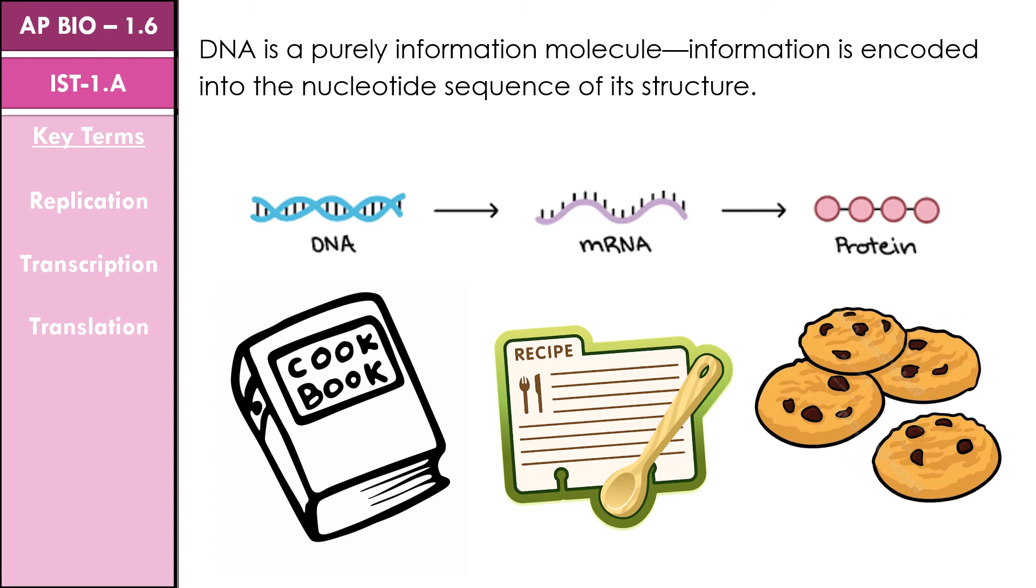Now DNA can be reproduced precisely through a process by DNA replication. To make a replica of something is to make an exact copy. We'll talk more about this in the future when we get into Unit 6.